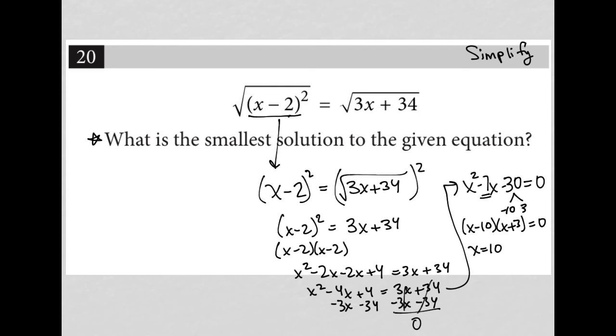And therefore, x would equal positive 10 and x would equal negative 3 in order to make this statement true. So the question asks for the smallest solution to the given equation. The smallest solution is negative 3. So you can plug in negative 3 for the digital SAT. So our answer here is negative 3.